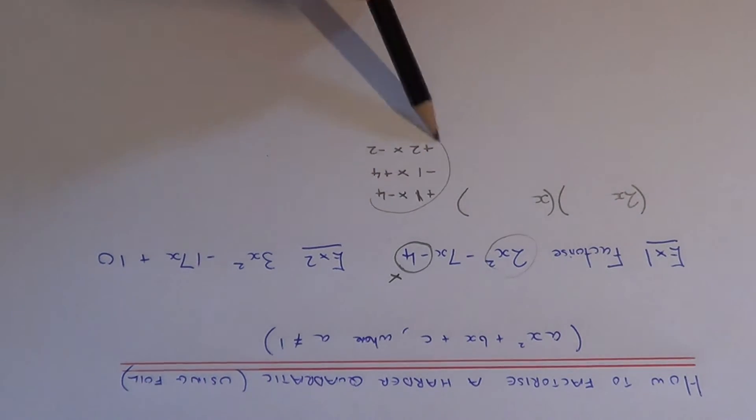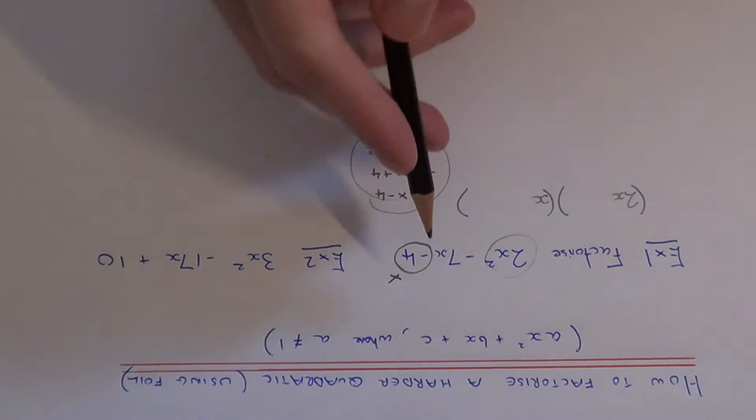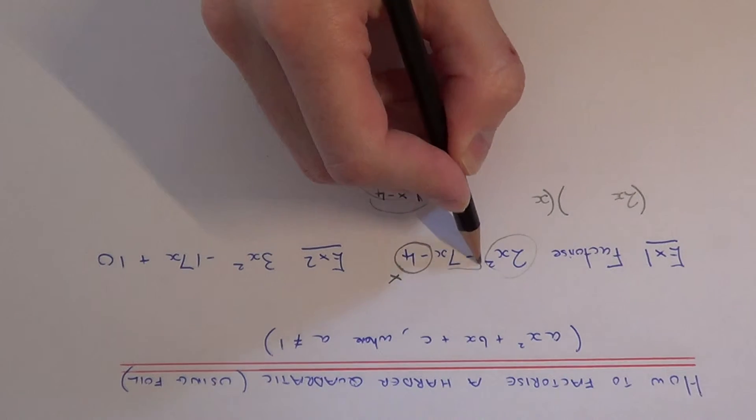We now need to put one of these pairs into the brackets here so that the middle two terms combine to give us this minus 7x.